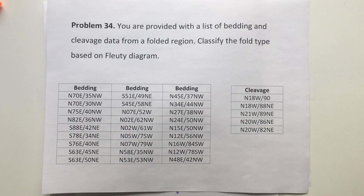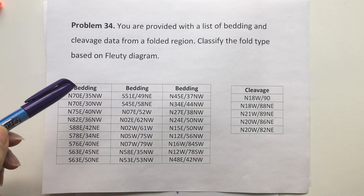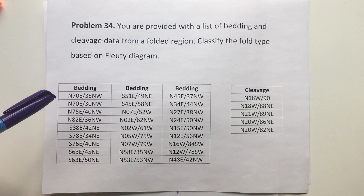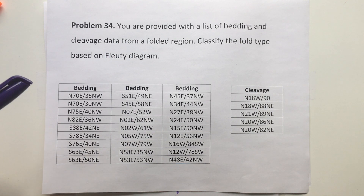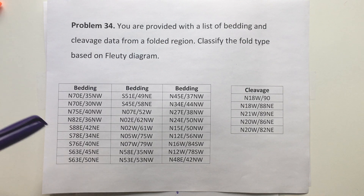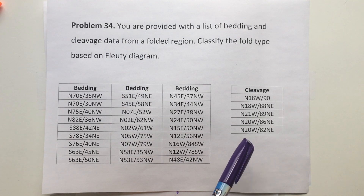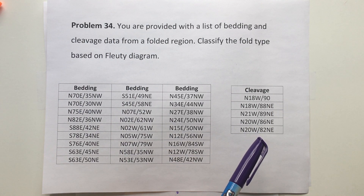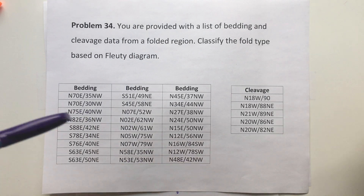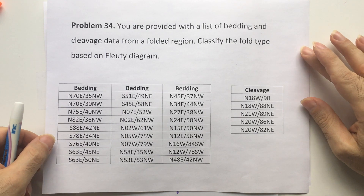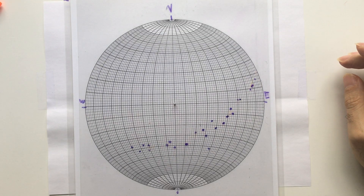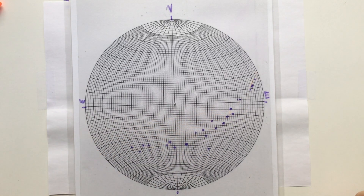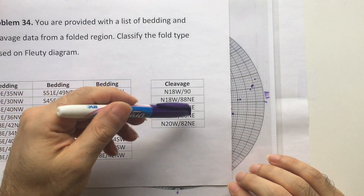In problem 34, I kept all the bedding activities the same as before because we don't want to redo all the poles of the beddings again. But this time I provided more information as a cleavage, so you can use this to increase the accuracy of your analysis. You've already plotted all the beddings, so I have a copy here with the poles of the beddings, and now we're going to do the same for the cleavage.